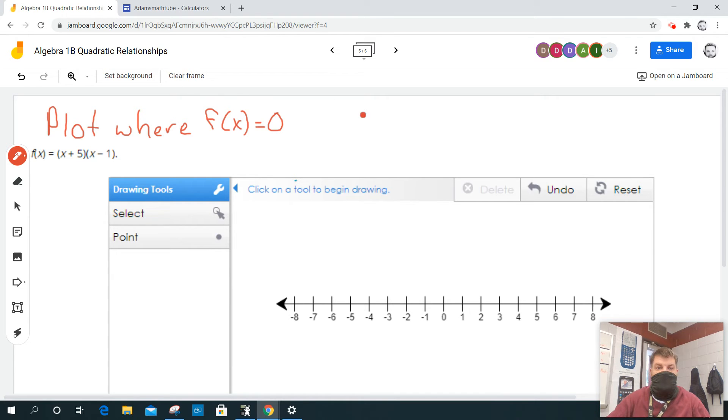So again, what we're looking at is when does this occur? When does f(x) equal zero for the quantity (x + 5) times (x - 1)?